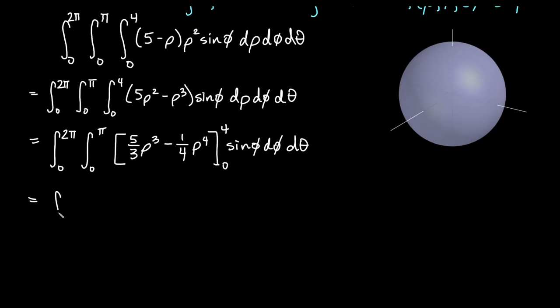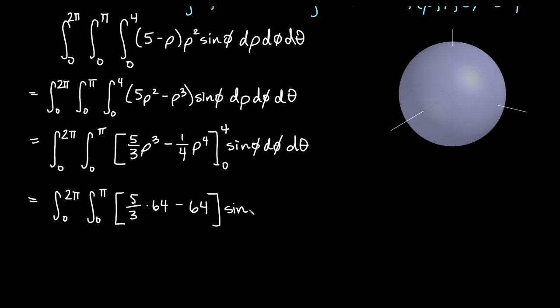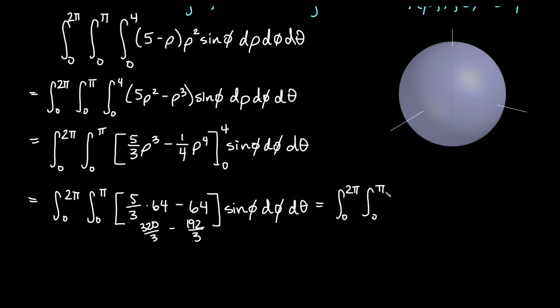Simplifying: 5 times 64 is 320, so 320/3 minus 64, which is 192/3, gives 128/3. We have the integral from 0 to 2pi, integral from 0 to pi of (128/3) sine phi d phi d theta.